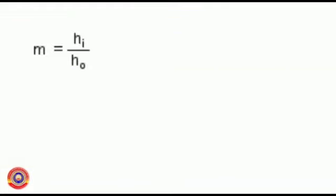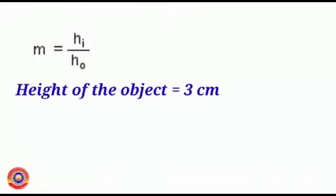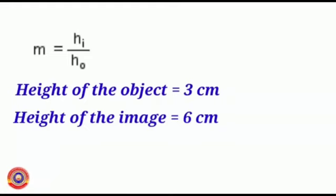We know magnification M equals H I divided by H O. Height of the object is given as 3 cm and height of the image is given as 6 cm. So, 6 divided by 3. Remember one thing.